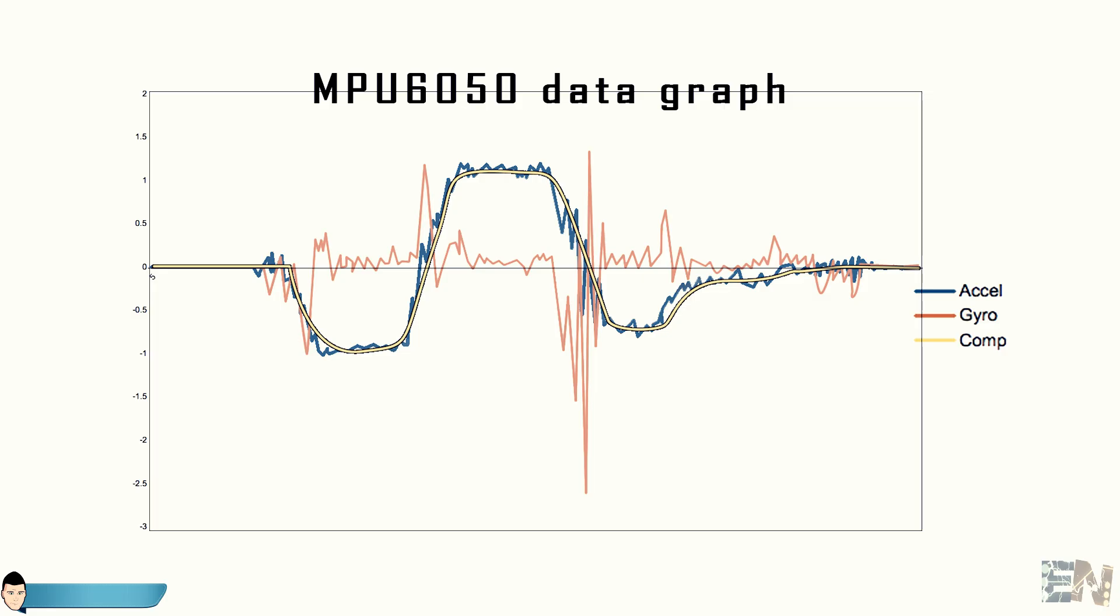This is a real data graphic made with the MPU6050 values. The yellow line is the real angle and as you can see it's way better having less errors than using just gyro or acceleration values. That's why we are using the complementary filter.